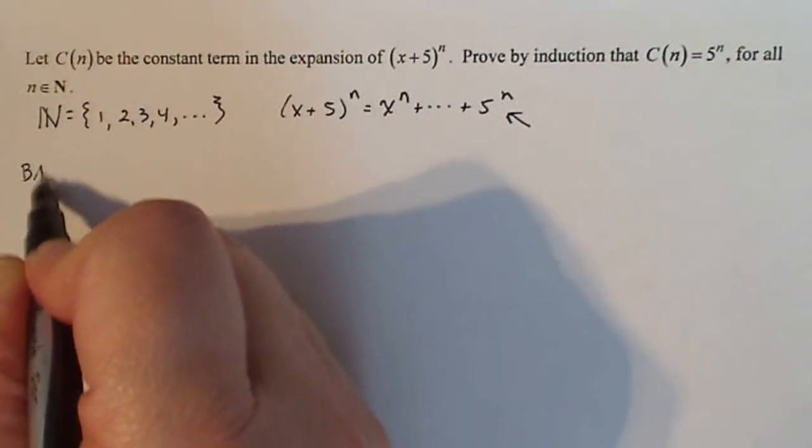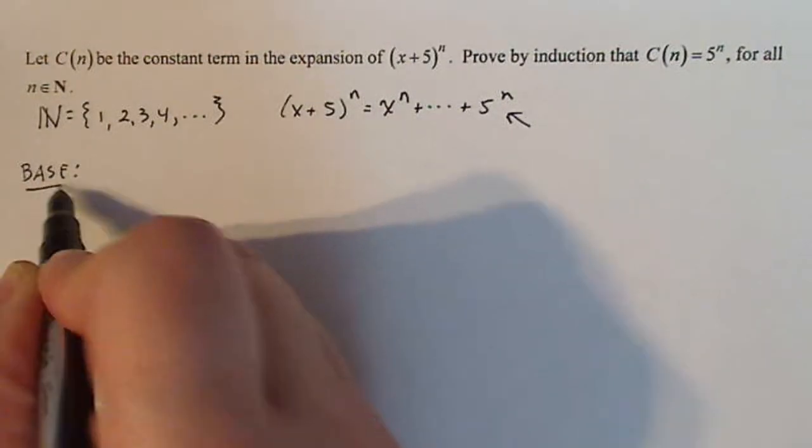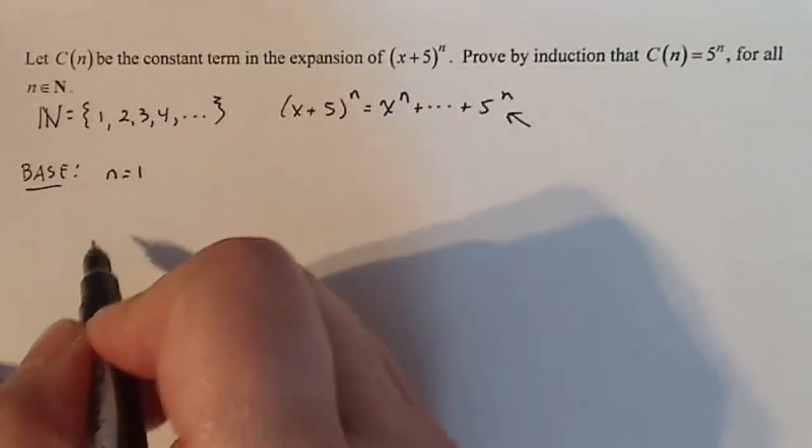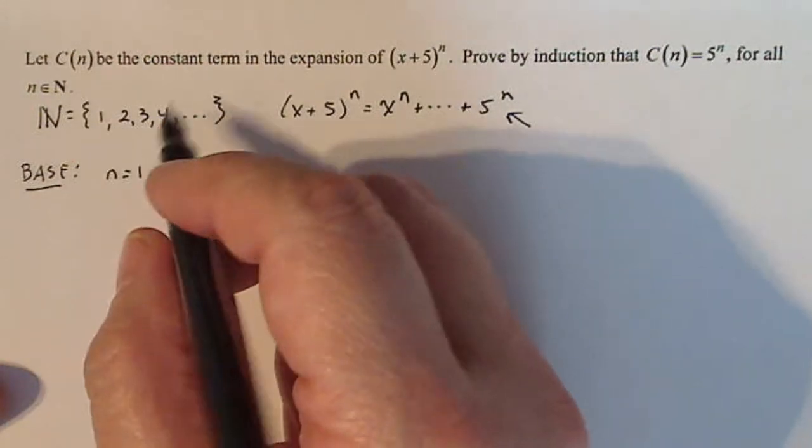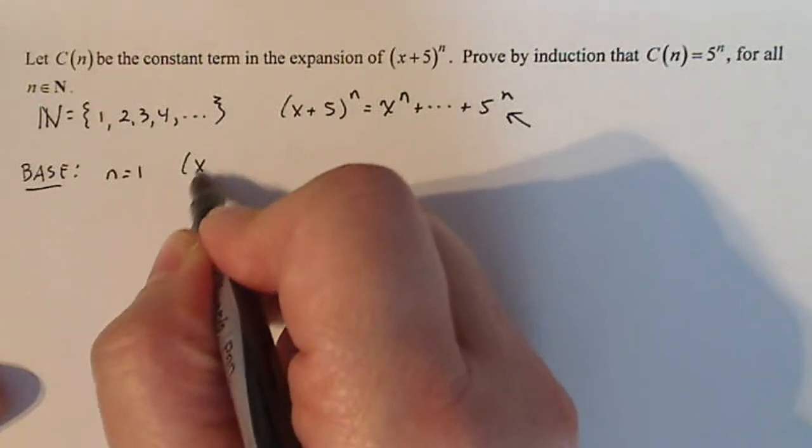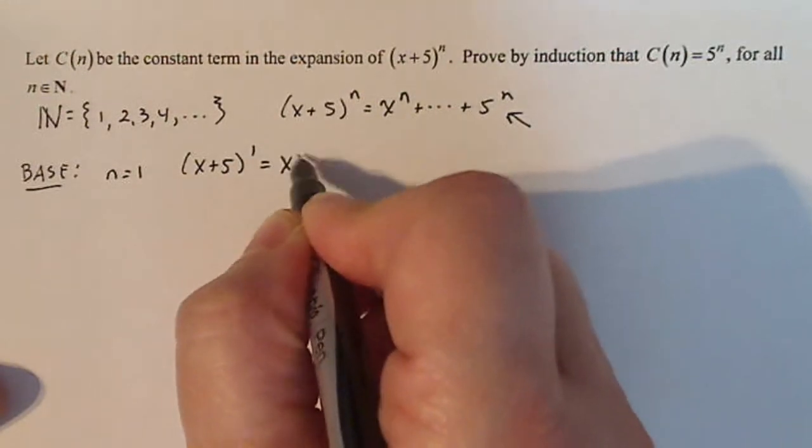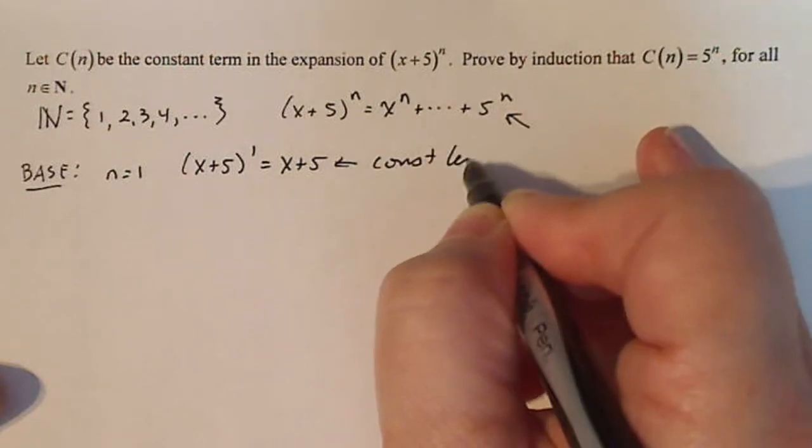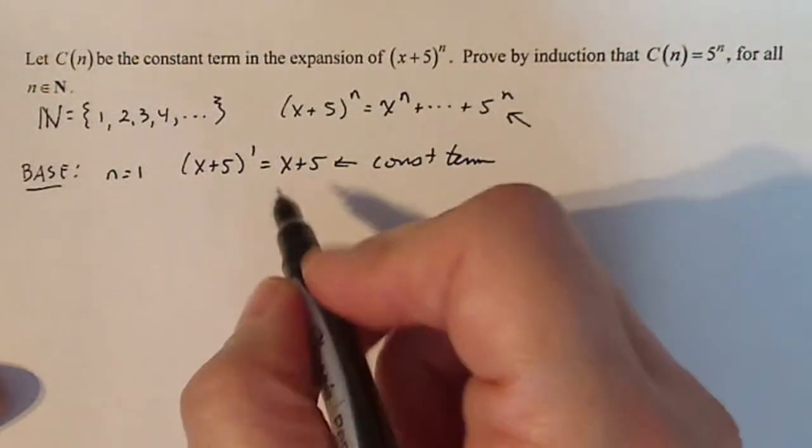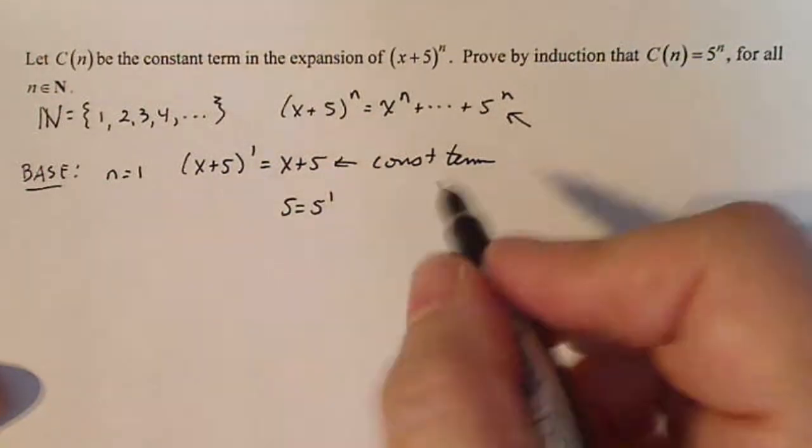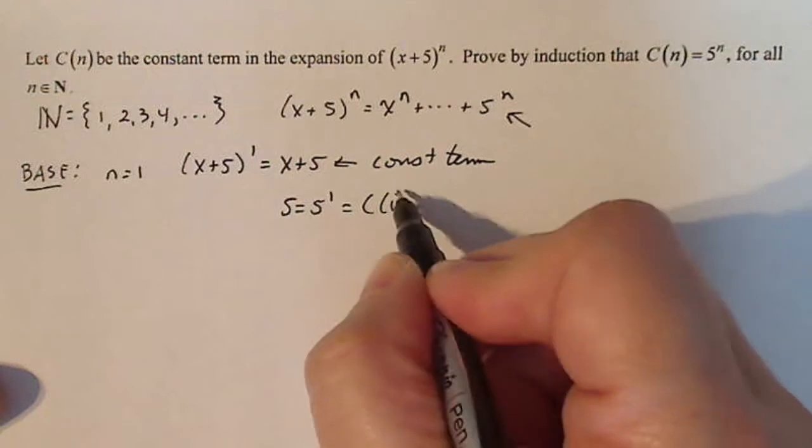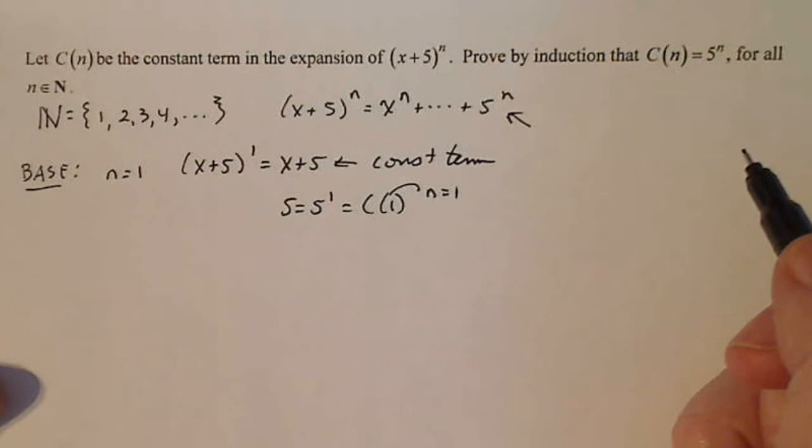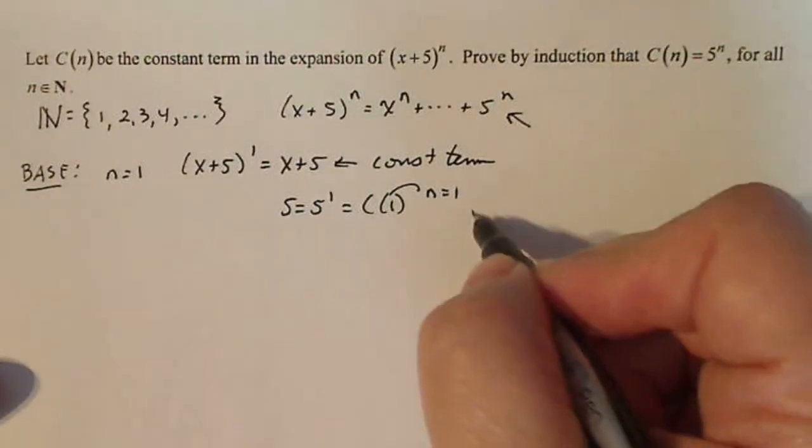So when I do the base case, it does help to take a look at that to confirm what you're thinking is right. So if I do n=1, which is the lowest n here, I can do (x+5)^1, which is just x+5. And here's the constant term. As you can see, it is 5^1. Five equals 5^1, which is C(1), where that number one in there is for n=1. I just think the notation in this problem is a little weird, but check.